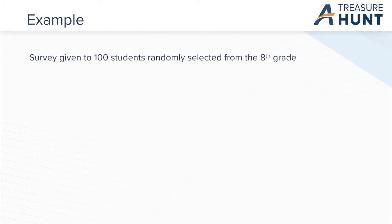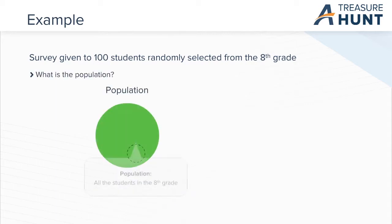For example, if a survey is given to 100 students randomly selected from the 8th grade, what would the population be? Well, it would be all the students in 8th grade because collectively they make the entire population of the 8th grade.